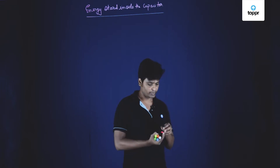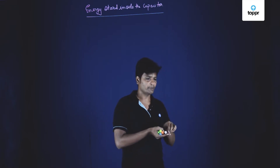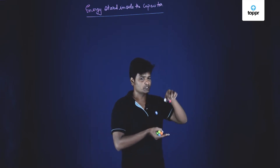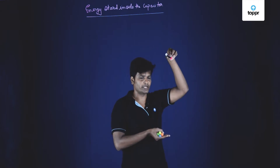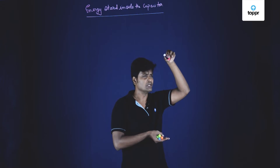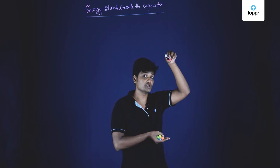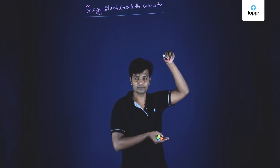For example, if I am doing work on this pen — applying force and displacing this pen to a certain height — I am doing work. Force into displacement is work. This work has got converted into potential energy and has got stored inside this pen.